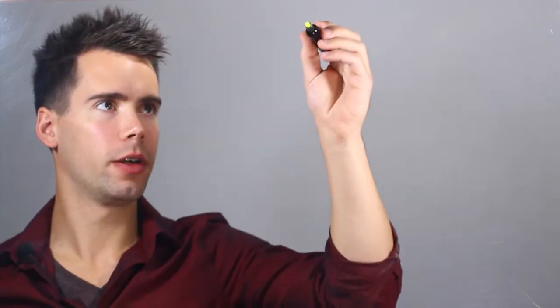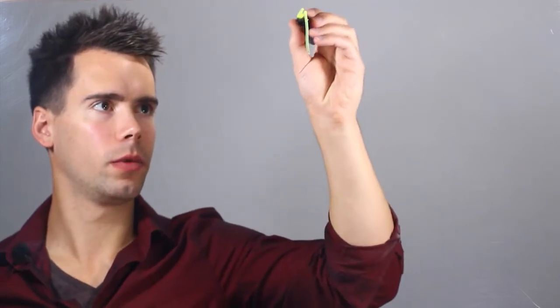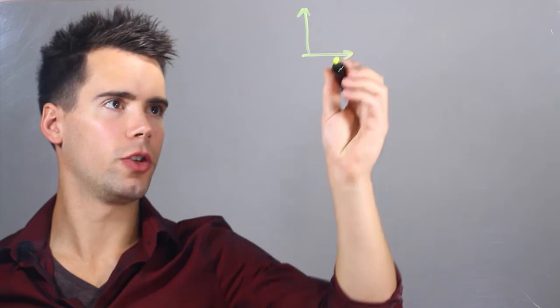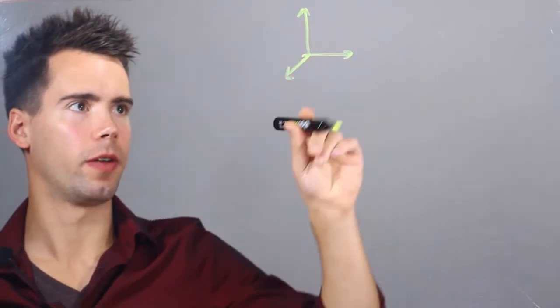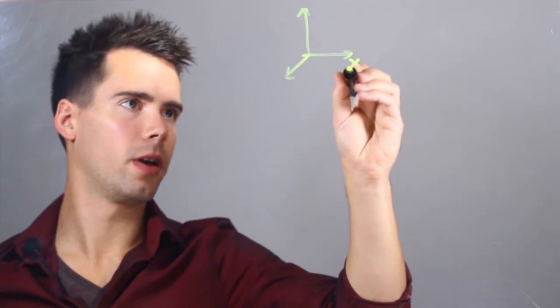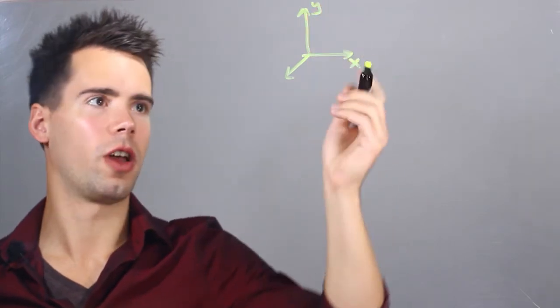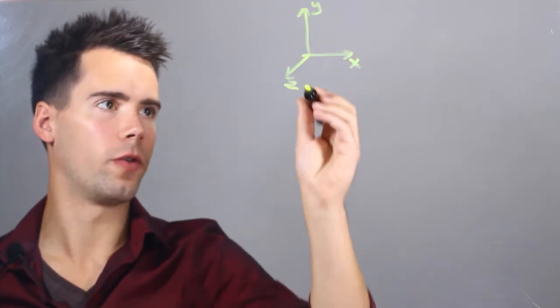So the first thing you want to do is draw your coordinate system. We usually use three-dimensional systems. If you don't, you're actually just using a simplified version where it's two. So you have an x, you can call the upward one y if you want, and z. You can call them whatever you want.